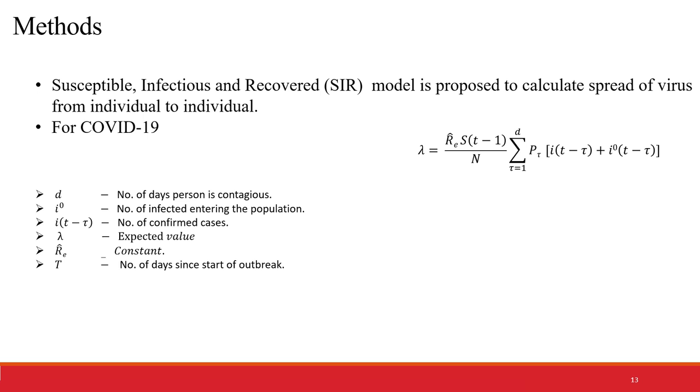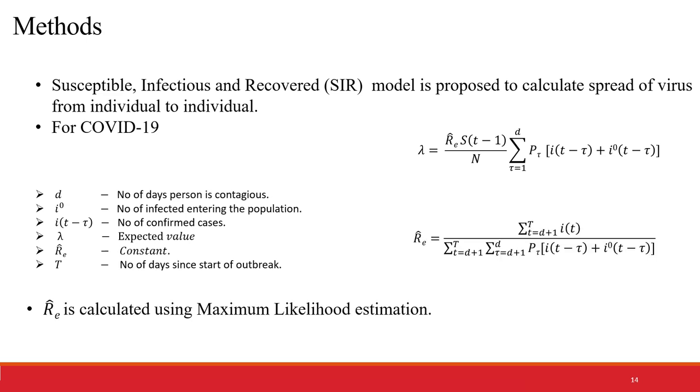Here, D is the number of days a person is contagious. I0 is the number of infected individuals entering the population, or number of confirmed cases. Lambda is the expected value. Re is a constant, and t is the number of days since the start of the outbreak. Constant Re is calculated using maximum likelihood estimation and plugged into the equation of expected value, lambda.